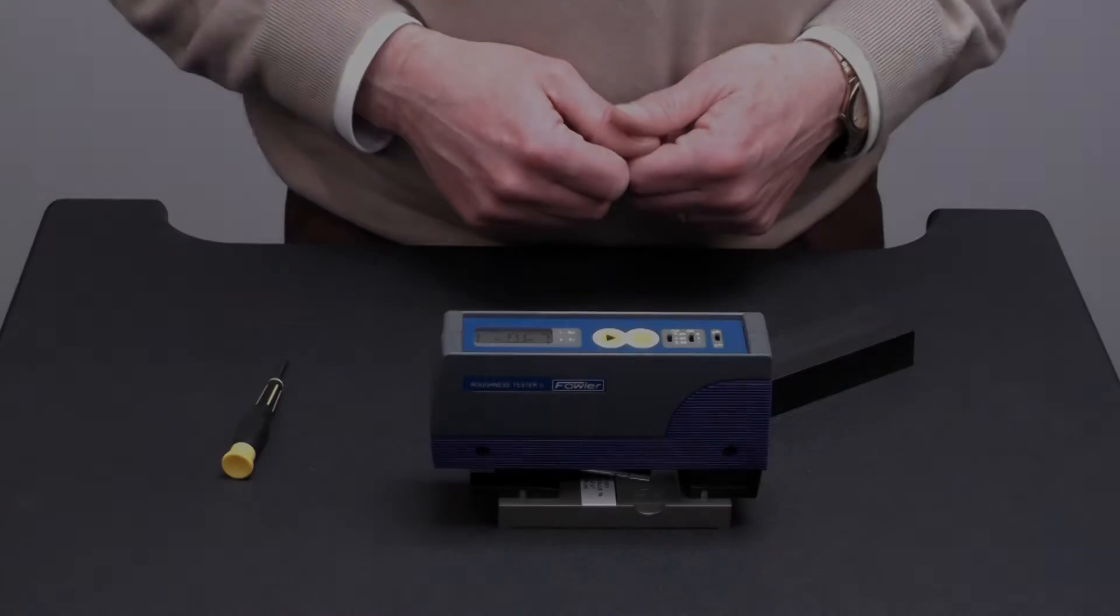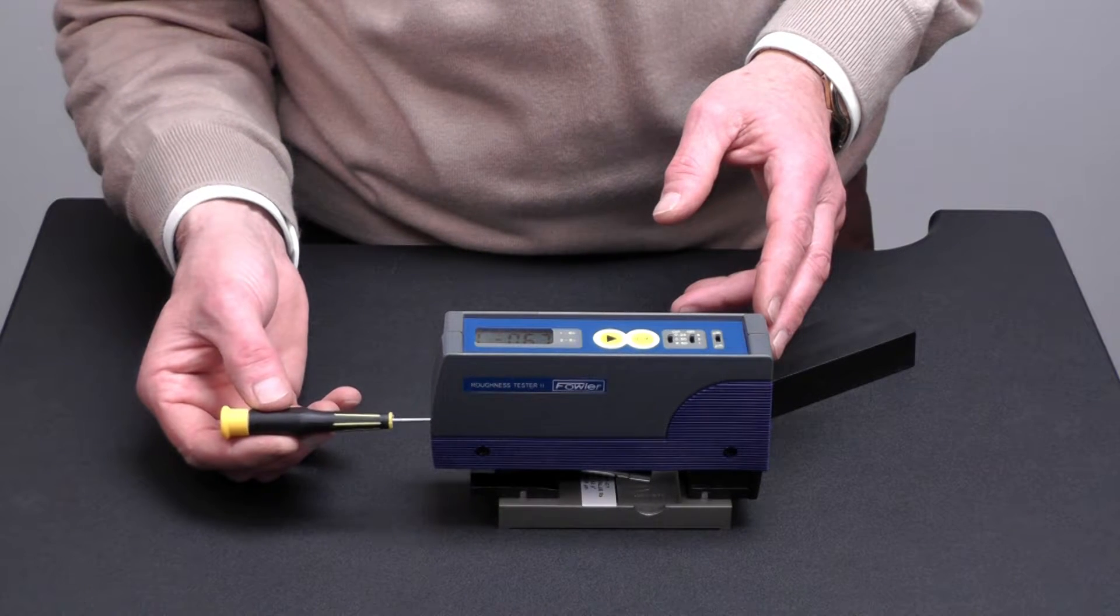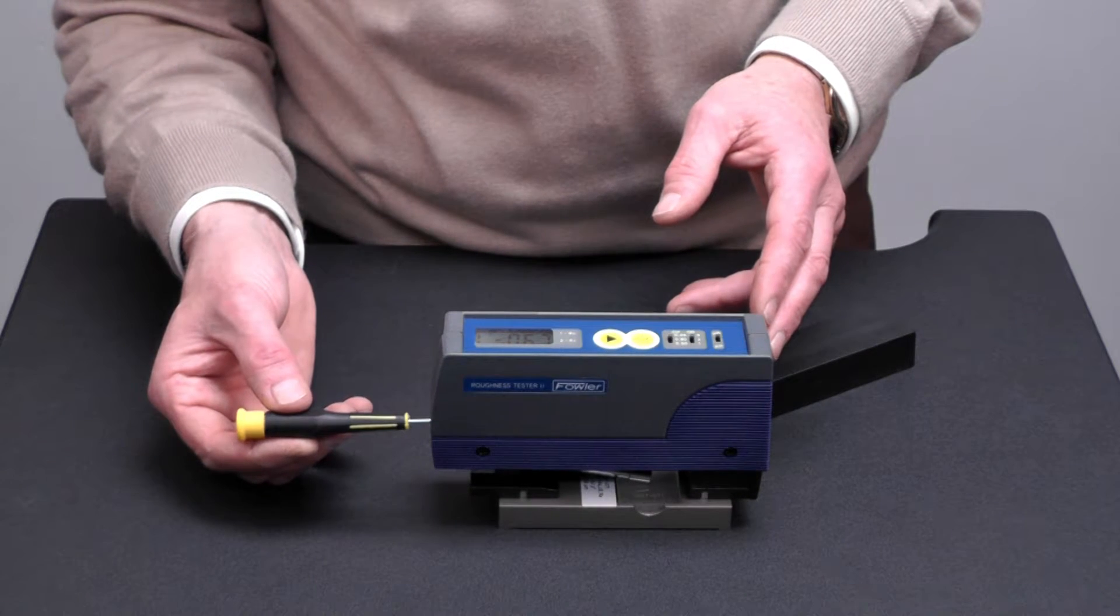If any adjustments are necessary, take the calibration screwdriver and turn the calibration potentiometer inside the unit until it reads correctly.